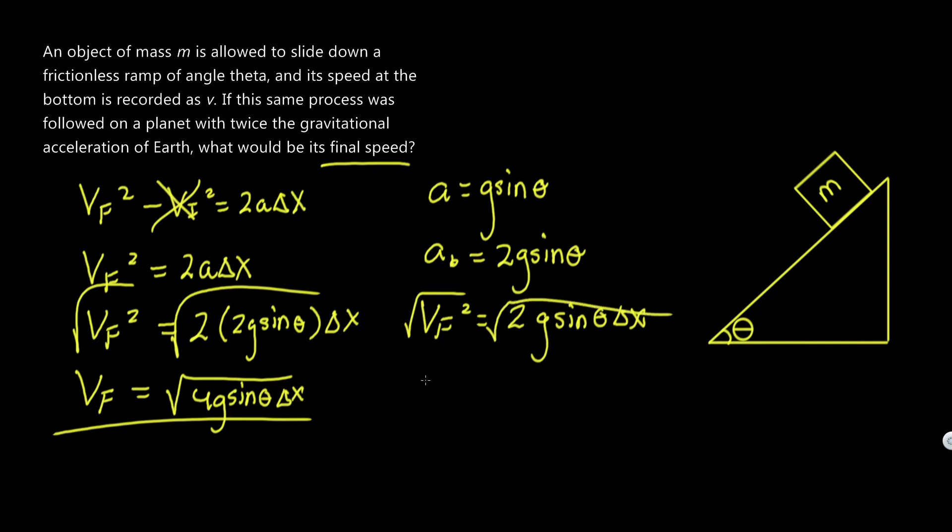We take the rad of that, and we get v final. I'll call this like initial, you know, for the sake of not confusing the two, equals rad 2g sine theta delta x.